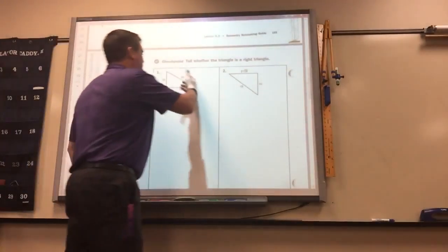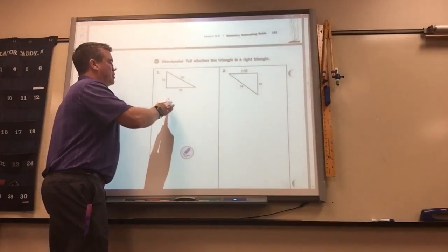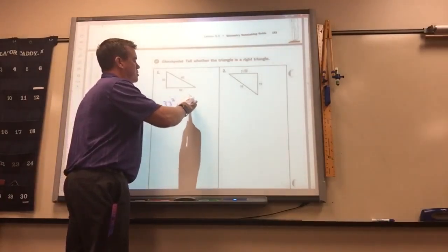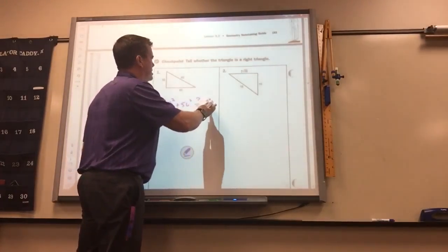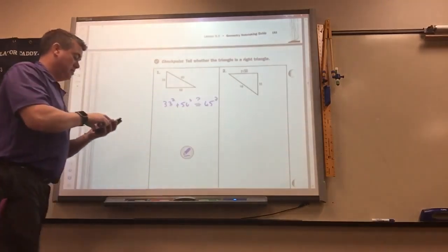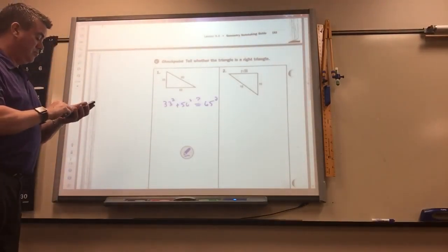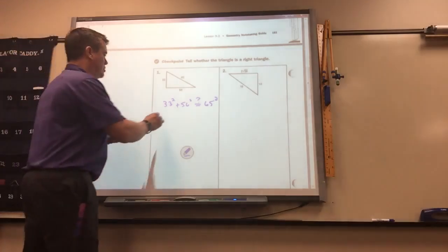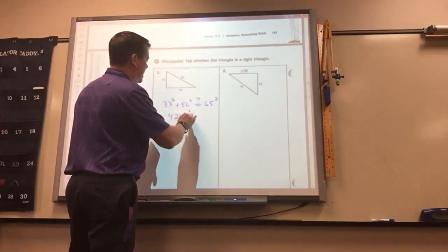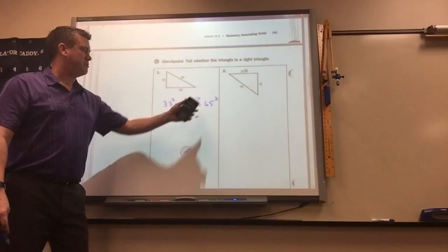So when they're regular numbers they're easy. 33 squared plus 56 squared, does that equal 65 squared? So this is 4225.